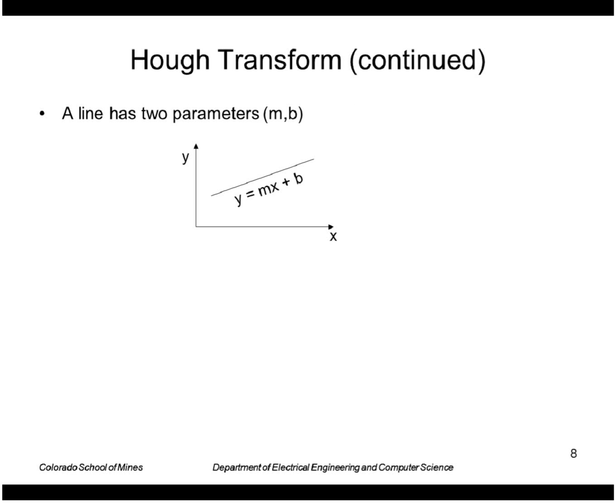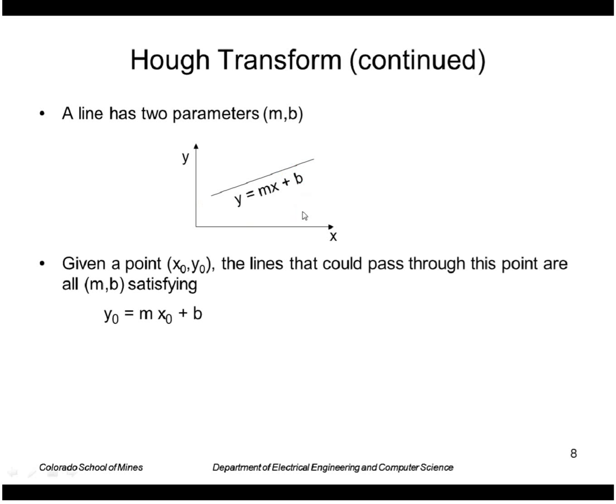The best way to think about it is to look at the parameters of a line. Using the slope-intercept form, the equation of a line is y = mx + b. If we find an edge point at point (x0, y0), all lines that could pass through that point satisfy this equation: y0 = mx0 + b. So basically all the values of m and b that satisfy this equation are candidate lines. Or we could solve for b in terms of x0 and y0.